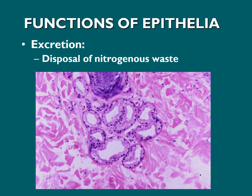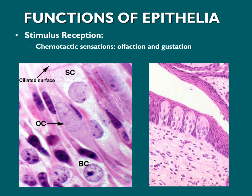Another function is excretion — for example, the disposal of nitrogenous waste. Another function is stimulus reception — for example, in our nose, the middle concha contains olfactory epithelium, which is responsible for olfaction. Another example of stimulus receptors is taste buds, found in the tongue, which are very important in the process of gustation.